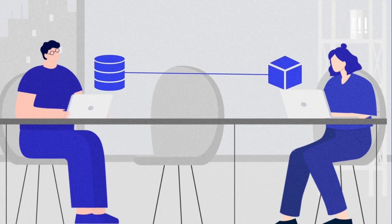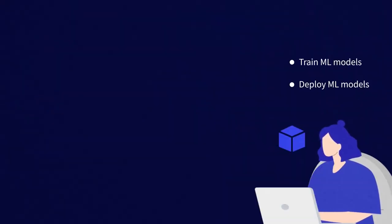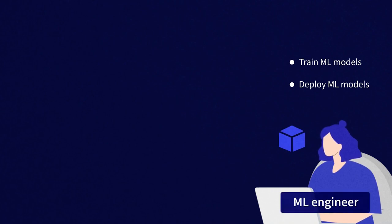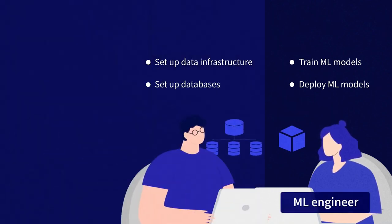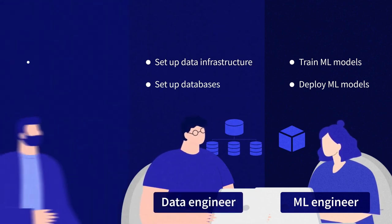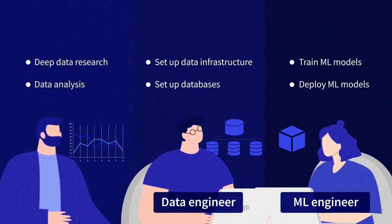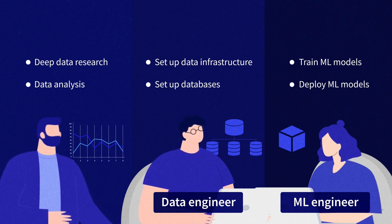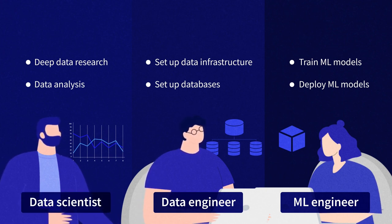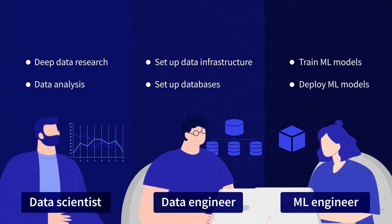And there you have it. If you're aiming at running machine learning models in production, you're looking for an ML engineer. To set up data infrastructure and databases, you'd look for a data engineer. And if you need deep data research and analysis without necessarily running machine learning, you should consider data scientists. Of course, it's hard to draw clear lines to separate these three roles, but this distinction should help guide your decision.